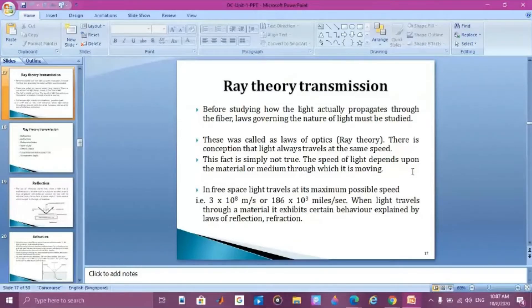The speed of light depends upon the material or medium through which it is moving, whether it is glass, air, or anything. When the medium changes, the light speed also changes. So the light speed is not constant.